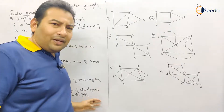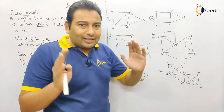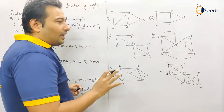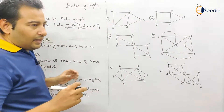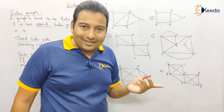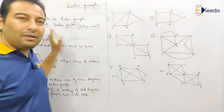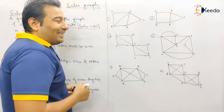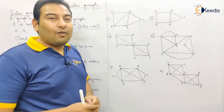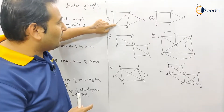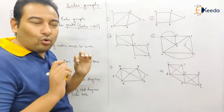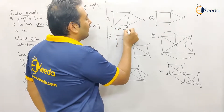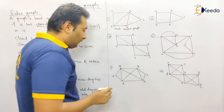Now let's apply this to examples. My aim is to check whether graphs are Euler graphs or not, and if so, find the Euler circuit. For the first graph: the criterion is all vertices must have even degree. Checking degrees — one vertex has degree 2 (even), another has degree 3 (odd). There is a vertex with odd degree, so it is not an Euler graph.